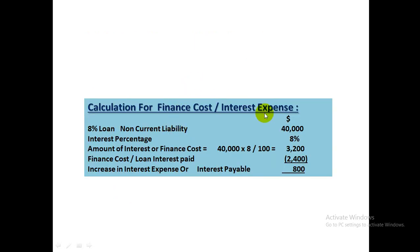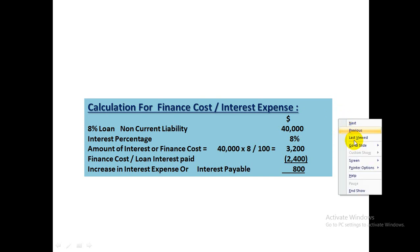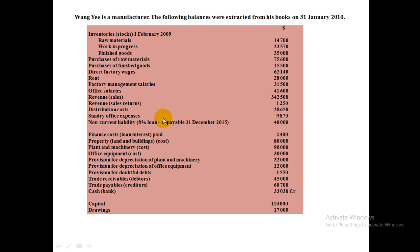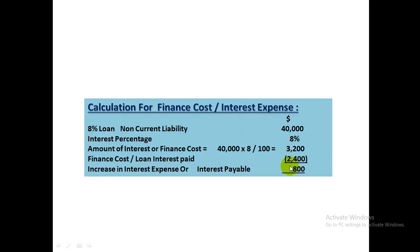For the interest expense calculation: the loan is 40,000 at 8%, so total interest expense is 3200. Finance cost paid (as given in the question) is 2400. Therefore, 800 is still unpaid. The full 3200 is taken to the Income Statement as interest expense, and 800 is shown as Interest Payable in the Balance Sheet as a current liability for Wang Yi Manufacturing.